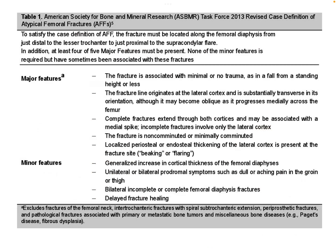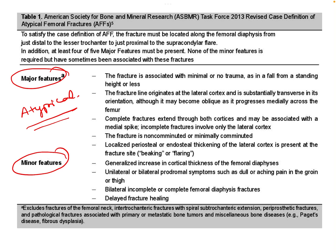Another commonly seen fracture type in the subtrochanteric region is the atypical fracture. To identify whether a fracture is atypical, we have five major features and four minor features. Out of the five major features, four must be positive to classify the fracture as an atypical femoral fracture.